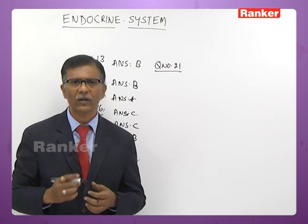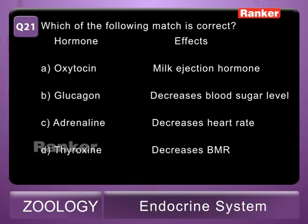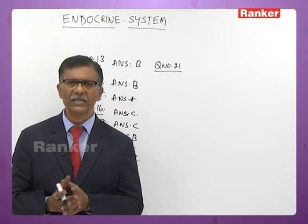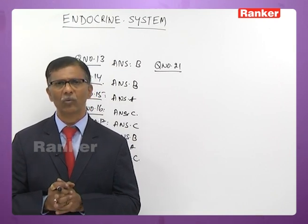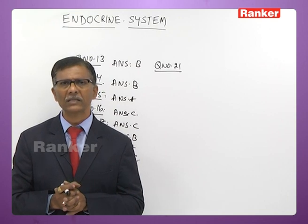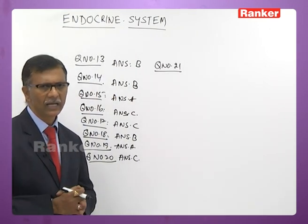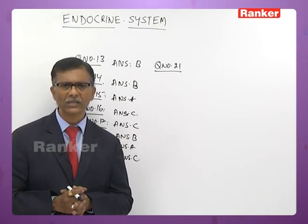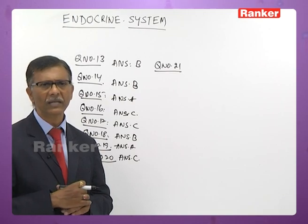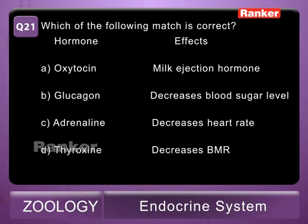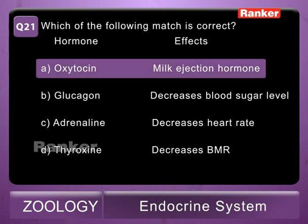Twenty-first question: which of the following matches is correct? A - oxytocin: milk ejection hormone; B - glucagon: decreases blood glucose; C - adrenaline: decreases heart rate; D - thyroxine: decreases BMR. Oxytocin is responsible for ejection of milk and is also called the labor hormone or birth hormone as it induces labor pains. The correct answer is A — oxytocin as milk ejection hormone.